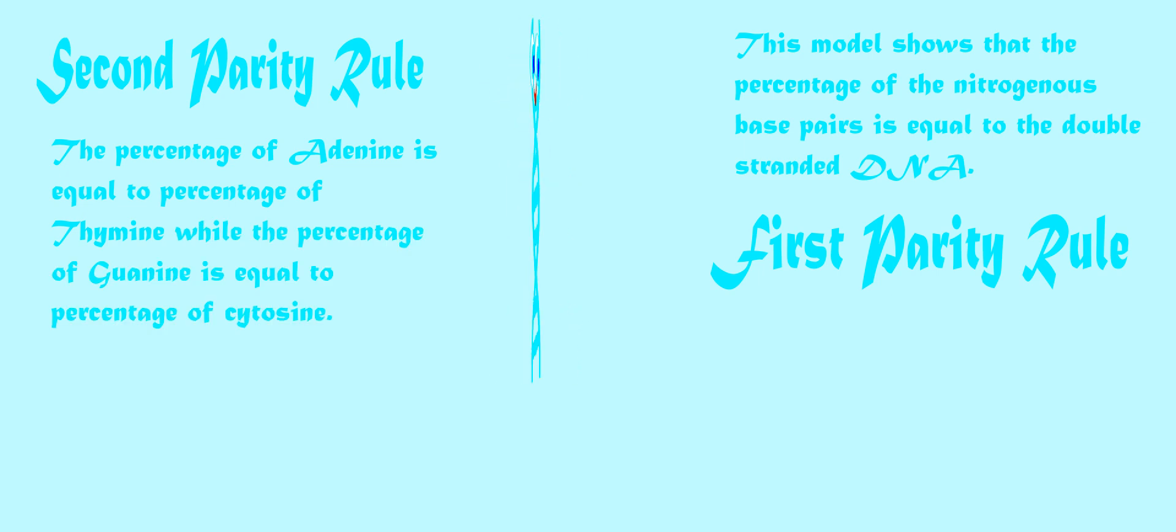This is called the first parity rule. The second parity rule states that the percentage of adenine is equal to the percentage of thymine, while the percentage of thymine is equal to the percentage of cytosine. This is the